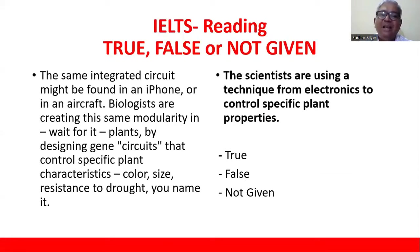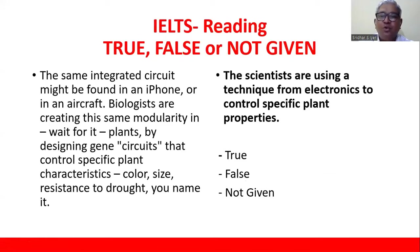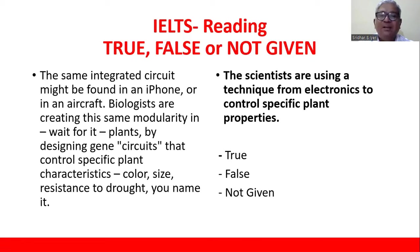What is inference? Inference is something related to that particular question. Here they are saying: 'The scientists are using a technique from electronics to control specific plant properties. True, False, or Not Given.' There are about 14 question types. If you are given True/False/Not Given, they will definitely not repeat question types to make it more difficult. So if they give sentence completion, summary completion will not be there. Multiple choice will certainly be there, but if they give match the heading, they might not ask for match the information.